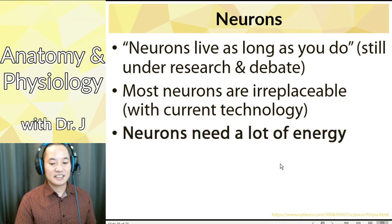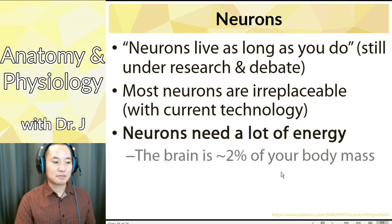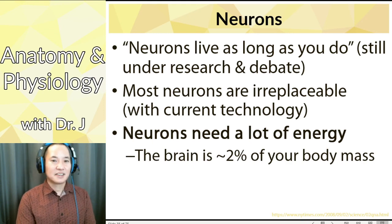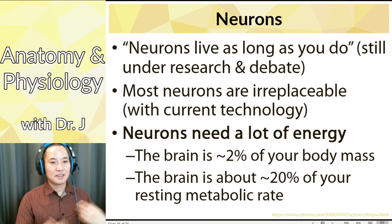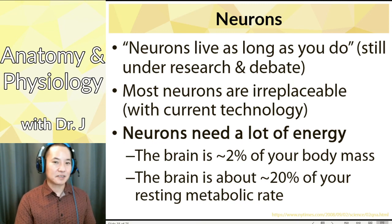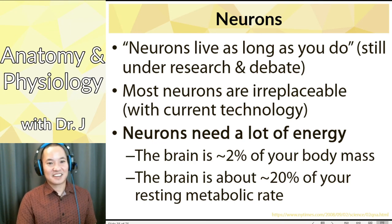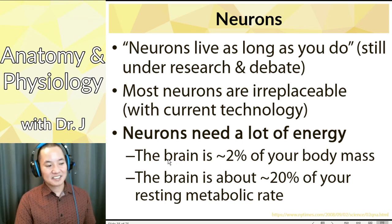So neurons, they are difficult to replace. And the thing about neurons is that they need a lot of energy. Your brain is about two percent of your body mass. But compared to the rest of your body, do all of the cells in your body consume the same amount of energy? The thing is that the brain is about 20 percent of your basal metabolic rate. So you're always consuming calories, even if you're not working out. Your brain is using up a lot of that energy. When you're sitting right now, your brain is using about 20 percent of the energy you're consuming right now. It's a very energy hog. So what I'm getting at is that neurons, they're difficult to replace and they require a lot of energy.